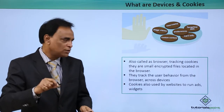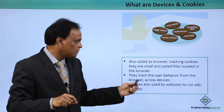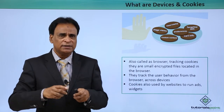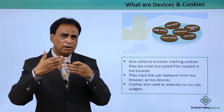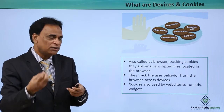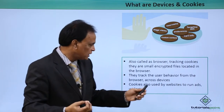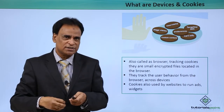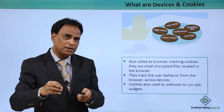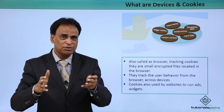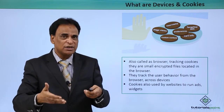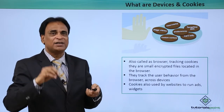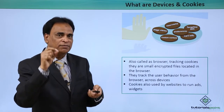They are also called browser and tracking cookies — they track user behavior from the browser across devices. With whatever device you are using, user behavior is tracked by the encrypted file downloaded on your system. Cookies are also used by websites to run ads and widgets, and third-party companies use them to access user behavior and trends.